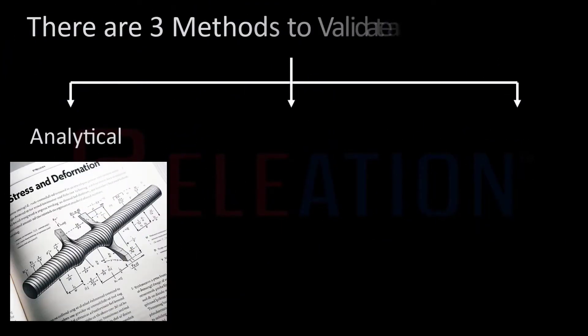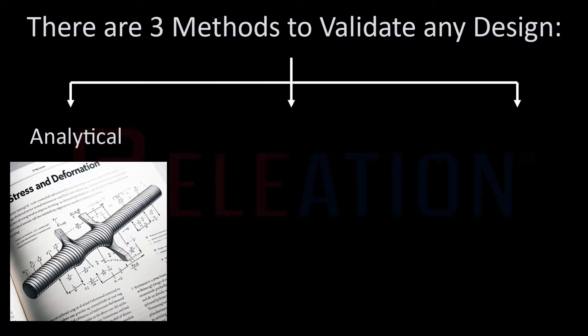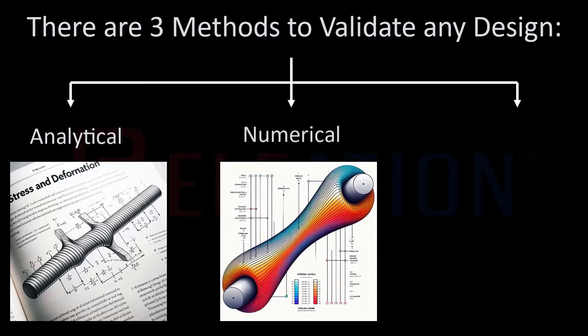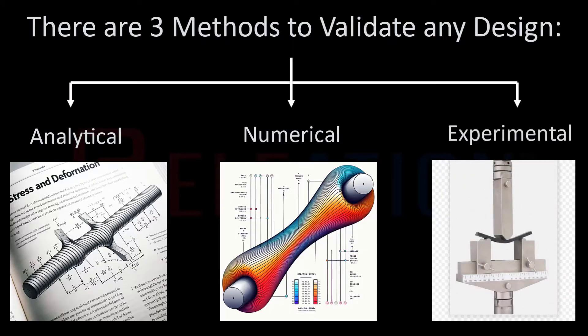Analytical method: we have formulas to find these results. If you are utilizing formulas to obtain results, you are using the analytical method. Numerical method: software tools like ANSYS or Hyperworks can be used to derive results. Employing computer or CAE software to secure results indicates the use of the numerical method. Experimental method: you can manufacture the steel scale, fix it at both ends, apply the load at the center, and utilize testing setups to find the results. Conducting physical testing denotes the use of the experimental method.